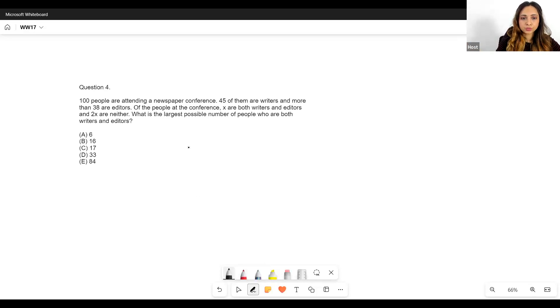So 100 people are attending a newspaper conference. We'll make the Venn diagram. 45 of them are writers, so here we have 45 and they are writers.